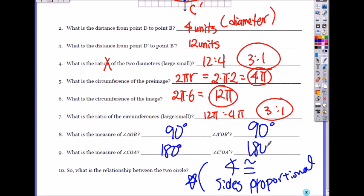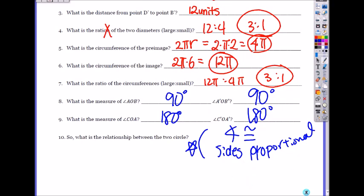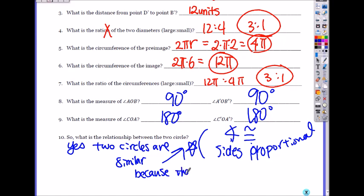So are those two circles similar? So yes. Yes. Two circles are similar. Because what? Angles are congruent. I'll write it. Because the angles are congruent and sides are proportional. Similar.